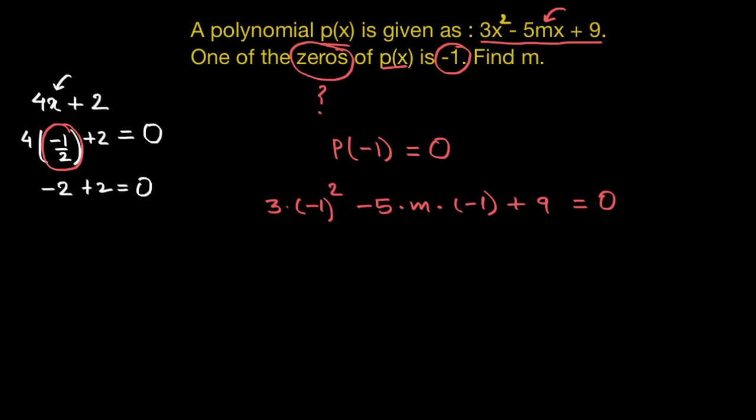Now we have a linear equation with an unknown m. We can solve this and find the value of m. Negative 1 whole square is 1. 3 times 1 is 3 minus 5 times m times negative 1. Negative 5 times negative 1 would give me positive 5. So this would become positive 5 times m plus 9 equal to 0.